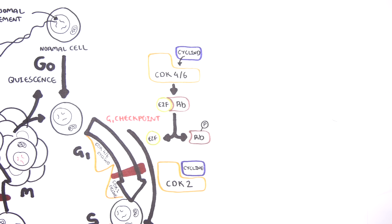With a mutation in the RAS gene, you produce RAS proteins that are already activated, so you always get this cascade of phosphorylation events and constant activation of transcription factors, overproducing cyclins and CDKs. The MYC gene is another oncogene; it normally makes proteins important for cell growth, cell survival, and cell activity. A mutation in the MYC gene makes the cell more cancerous — more cell growth, activity, and survival. Activation of these oncogenes allows a cell to bypass cell cycle checkpoints, resulting in uncontrolled cell growth.